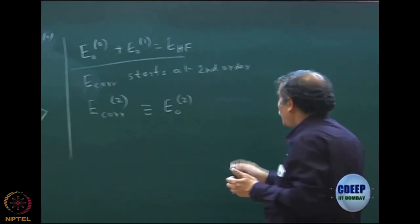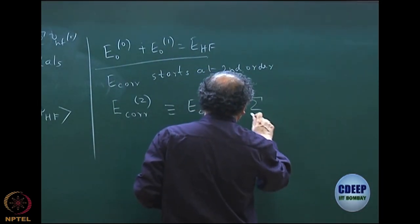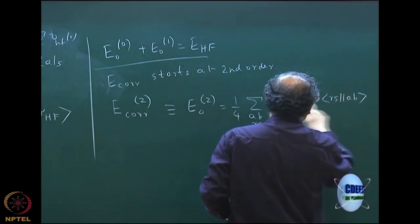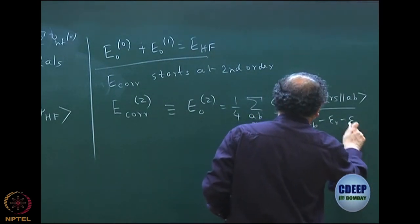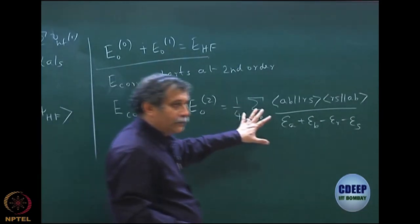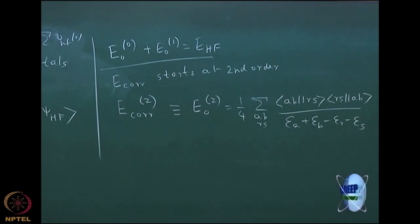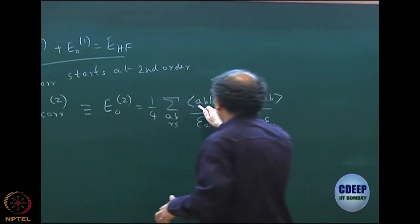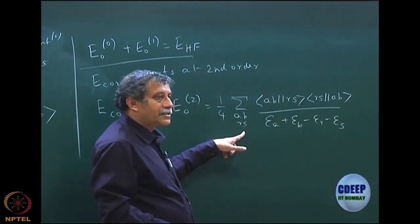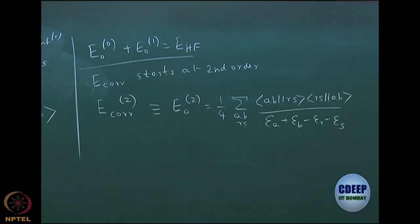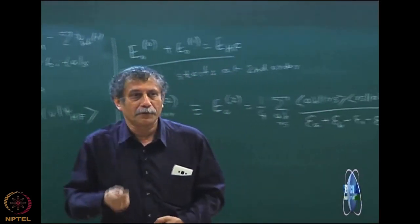Our first correction term comes from E naught 2, and we derived the expression that it is one-quarter times the sum over AB and RS, where RS are virtual orbitals and AB are occupied orbitals. Initially we wrote all excited determinants of H naught, but we found that singly excited determinants do not contribute because of Brillouin's theorem, so only doubly excited contribute. Applying Slater rules gives the two-electron integrals ⟨AB||RS⟩ mod squared, with a factor of 1/2 for each pair, giving the overall factor of 1/4.